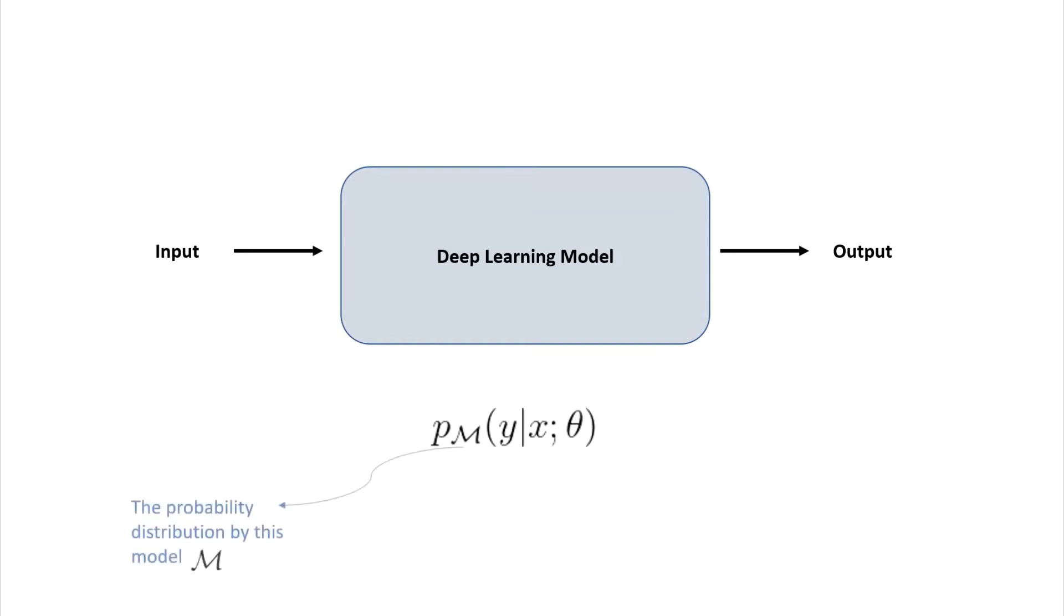The objective of a deep learning model is to transform some input x to an output y. Often you will see a probabilistic definition of deep learning models, where you can view the output y conforming to a probability distribution conditional on the input x and the model parameters theta. However, today, we are only concerned with the architecture of the deep learning model that takes us from the input to the output.